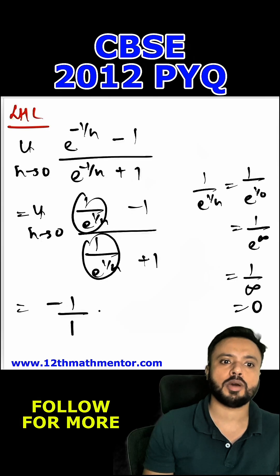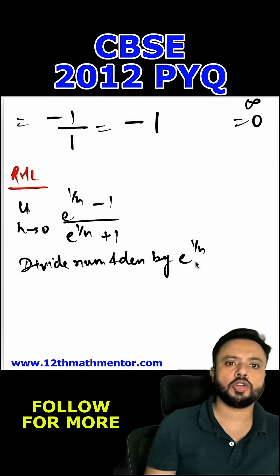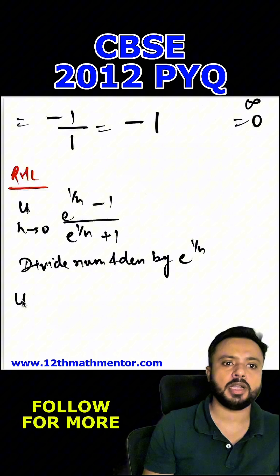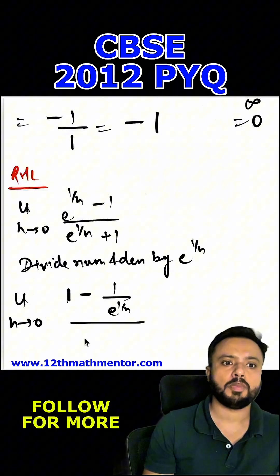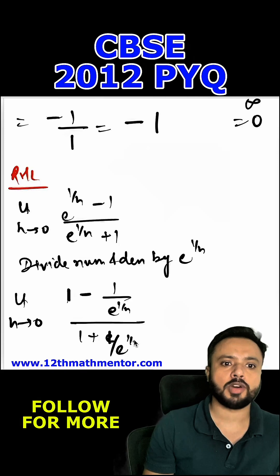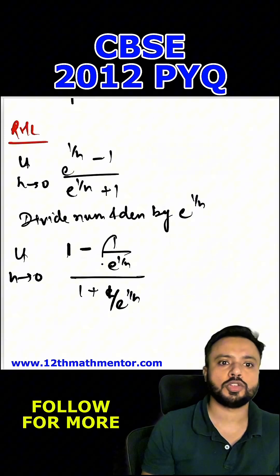To solve this RHL, I'm going to divide the numerator and denominator by e raised to the power h. I'll get 1 minus 1 upon e raised to the power 1 by h upon 1 plus 1 upon e raised to the power 1 by h. Now again when I'm going to substitute h value as 0, I'll get this as 0 and this as 0.